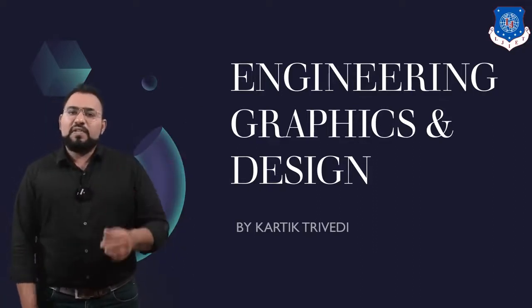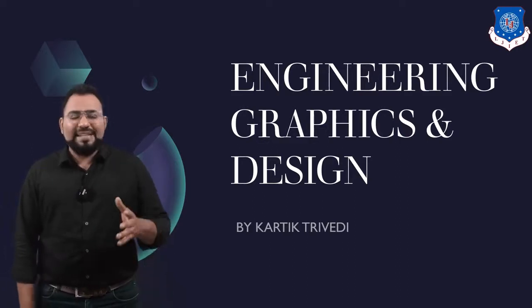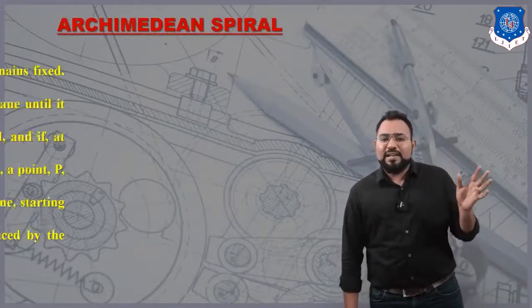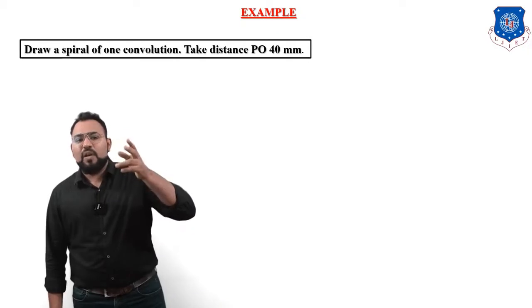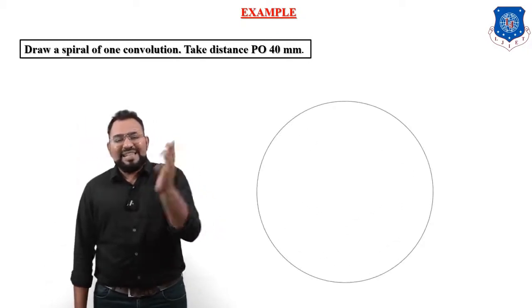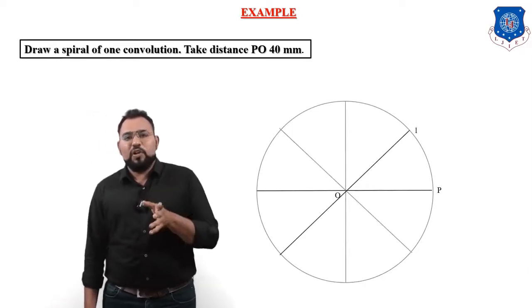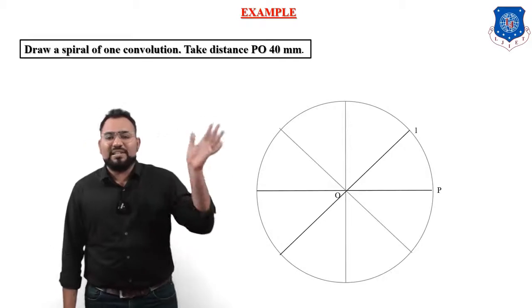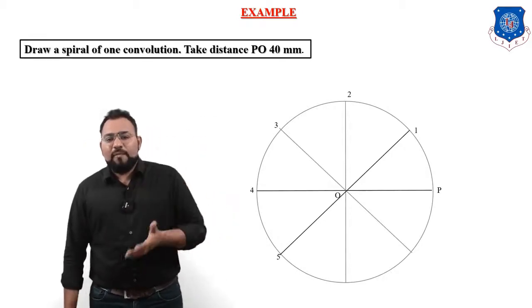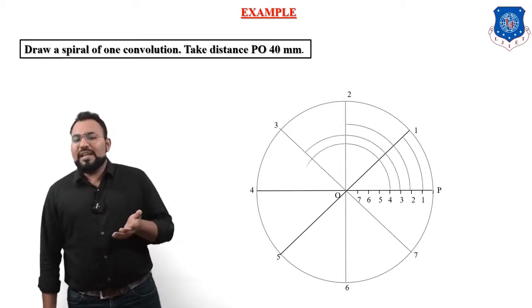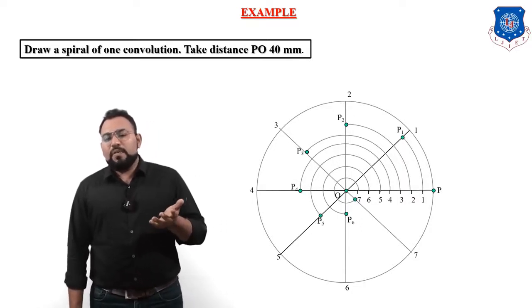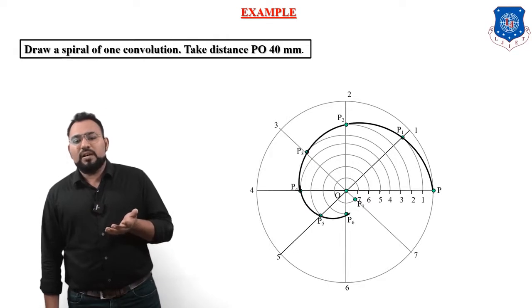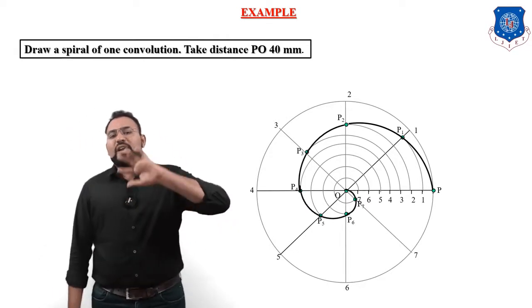In today's video we are going to see an example of two convolutions. Before we start, let us quickly revise what we did in the last video. We defined the Archimedean spiral, took one example of one convolution, gave point names p1, p2 up to pn, and drew the curve known as the Archimedean spiral.